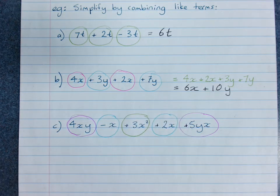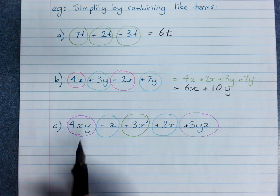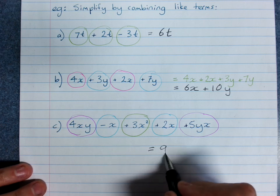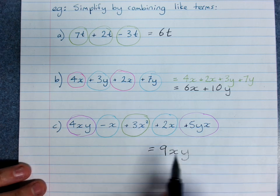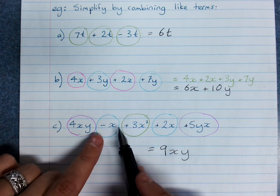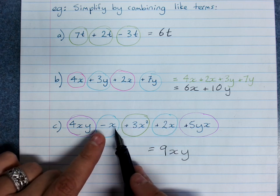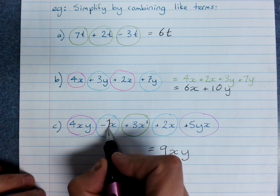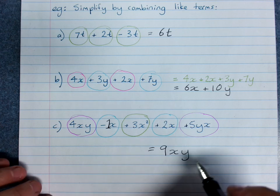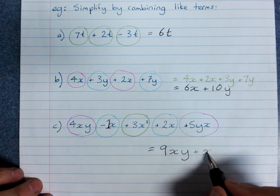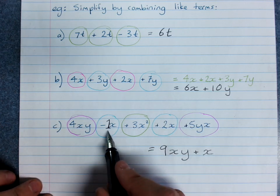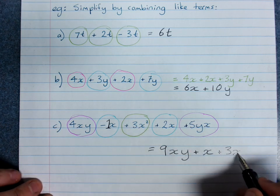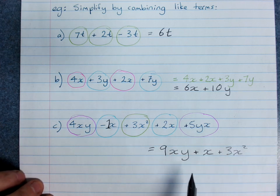So we're really just asking, how many lots of xy do I have? I've got 4 plus 5 lots - this will be 9 lots of xy. How many lots of x do I have? Minus 1 lot plus 2. So I've got 2x minus 1x, because remember this has an invisible 1. So this would just be 1x, so I can write plus x. And then plus 3x squared, because I've just got 3 lots of x squared. And you remember that x and x squared are different - they're not the same thing.